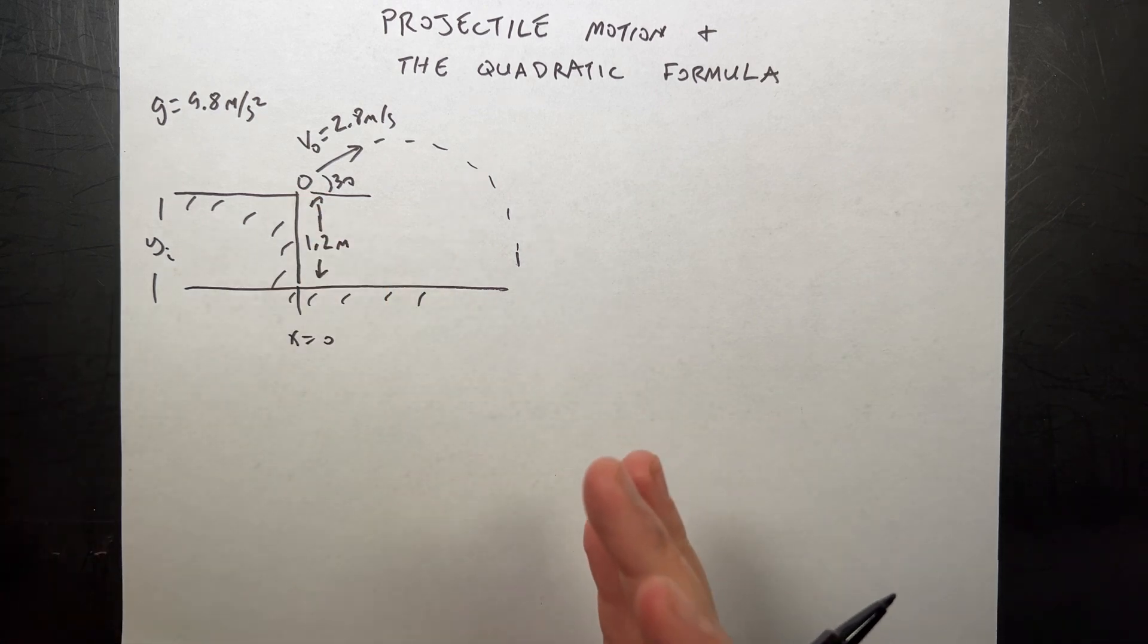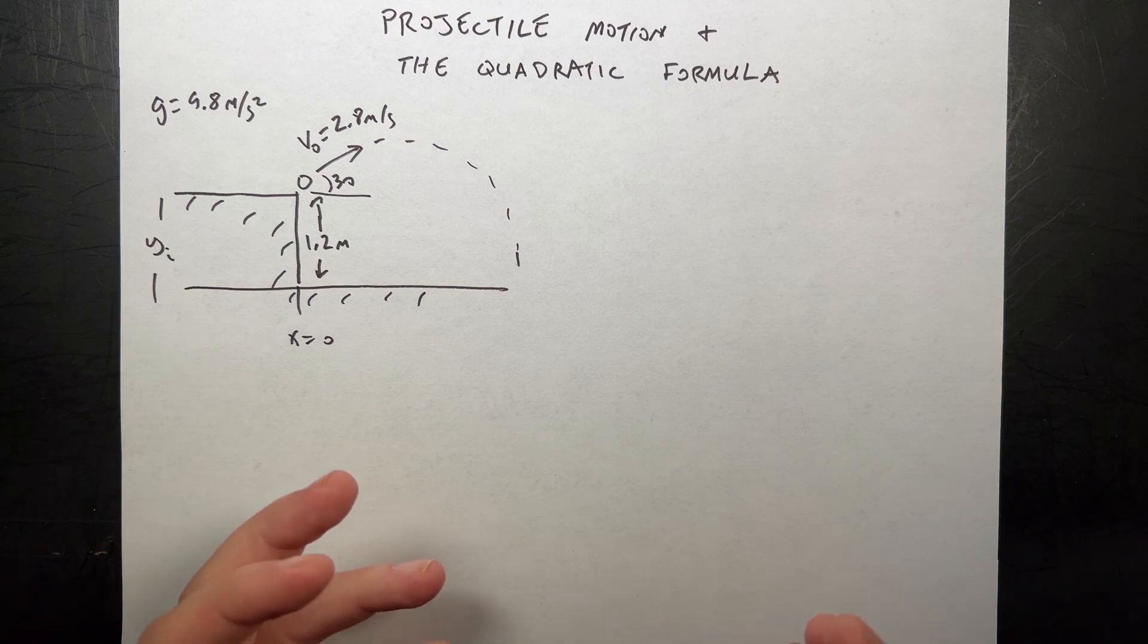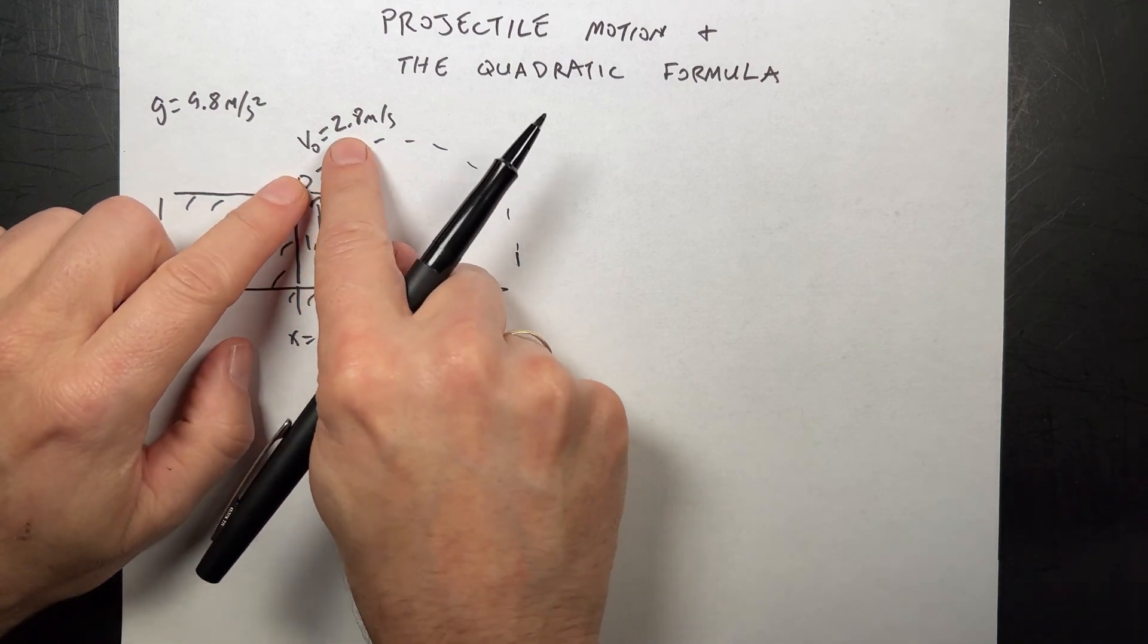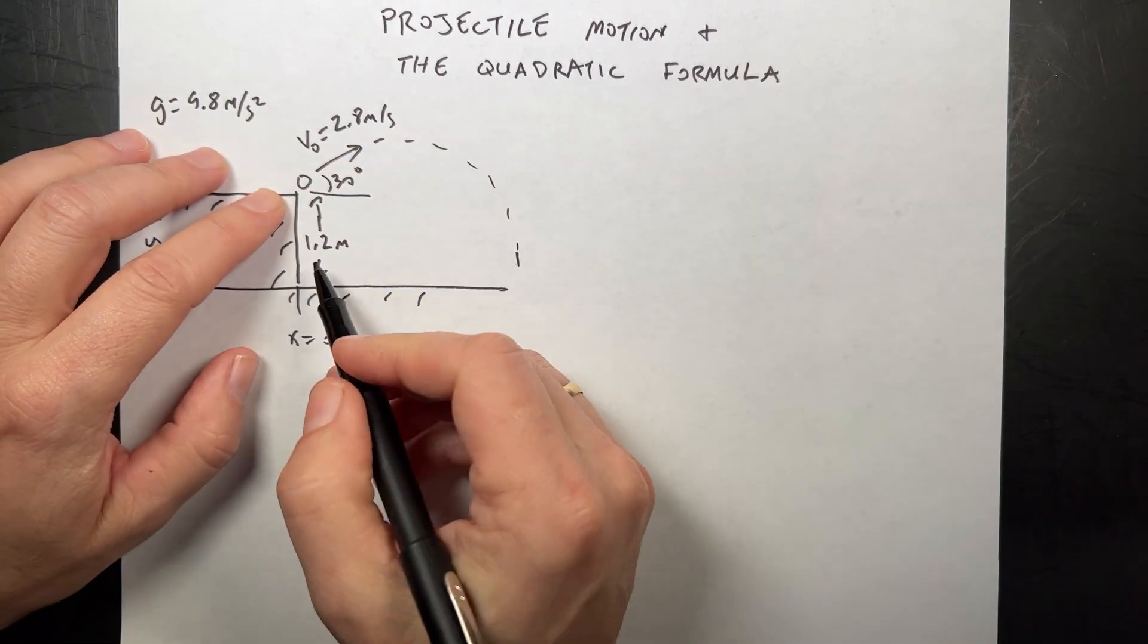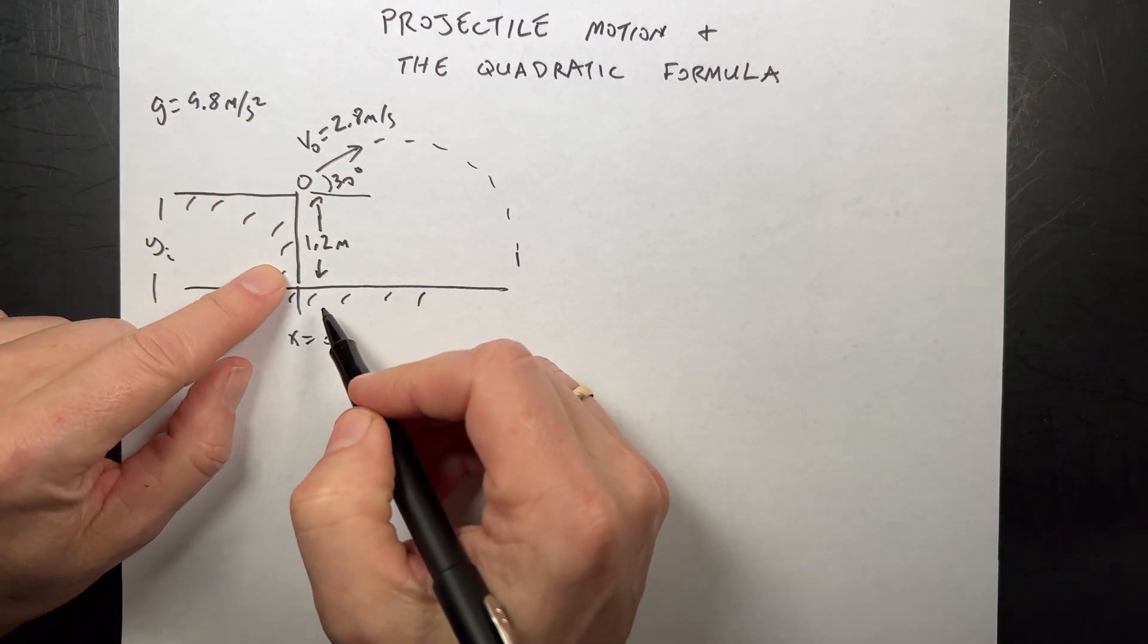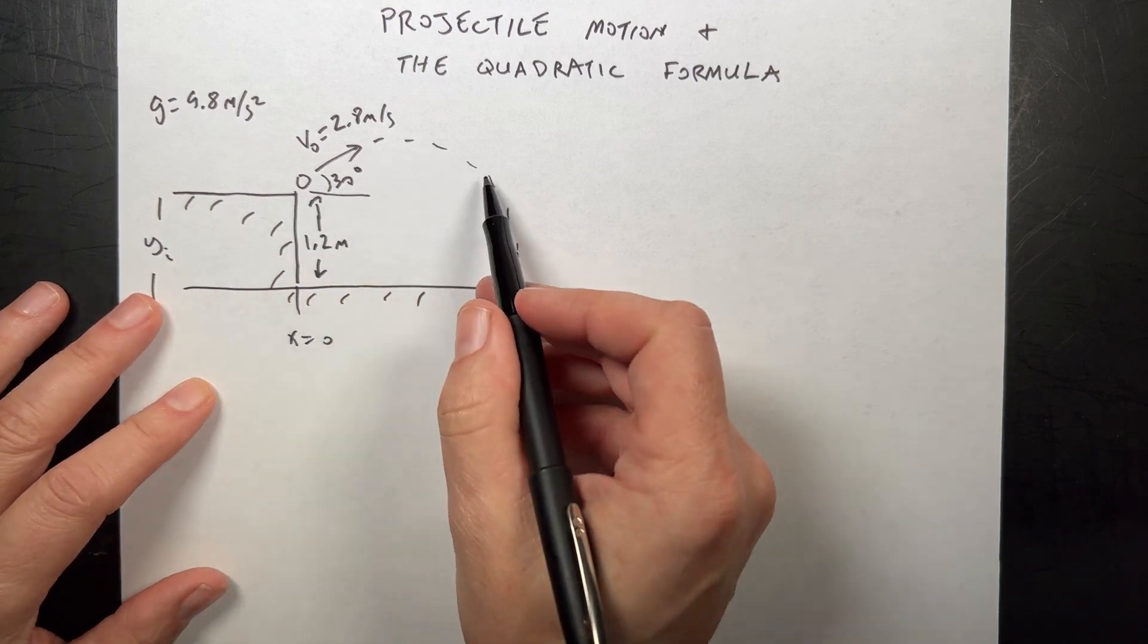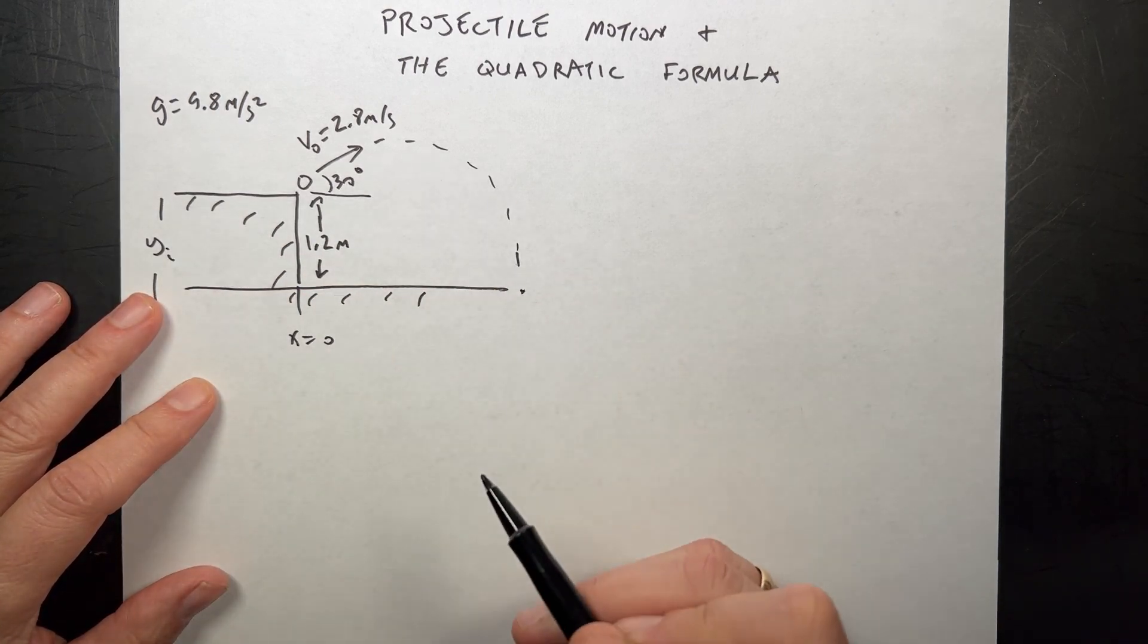Here's the problem I just made up with actual numbers. A ball is launched with a speed of 2.8 meters per second at a 30 degree angle off a table, 1.2 meters above the ground, and we want to find out where it lands over here. That's the goal.